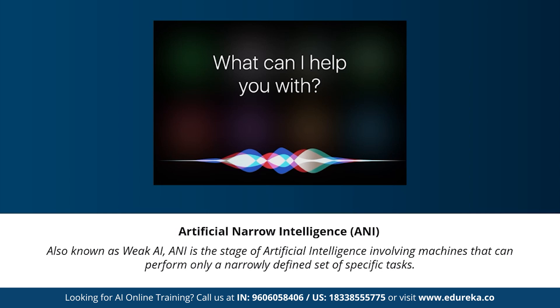Artificial narrow intelligence, also known as weak AI, is a stage of artificial intelligence that involves machines that can perform only a narrowly defined set of specific tasks. At this stage, machines don't possess any thinking ability — they just perform a set of predefined functions. Examples of weak AI include Siri, Alexa, AlphaGo, Sophia, and self-driving cars. Almost all AI-based systems built to date fall under the category of weak AI or artificial narrow intelligence.